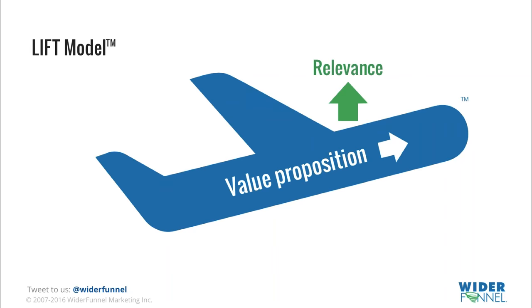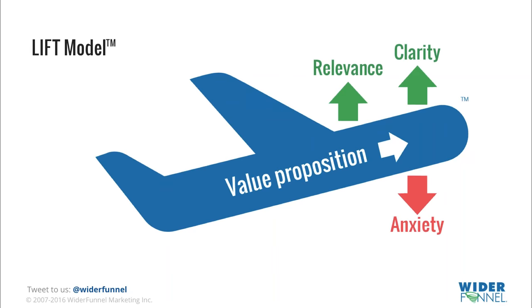The relevance of the presentation is the relevance to their needs and to the source media to where they just arrived from. The clarity of the presentation is clarity of the eye flow and the imagery. You can think of it thinking about that e-commerce category page we just saw. The clarity of the color versus palette — those small cues can make a big difference in clarity. Anxiety is anything that creates uncertainty in the prospect's mind about taking action. Distraction is anything that redirects attention from the primary message or the primary call to action.